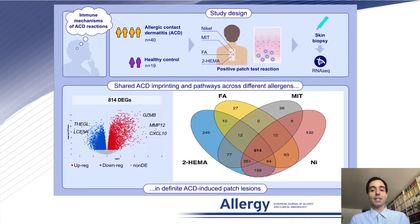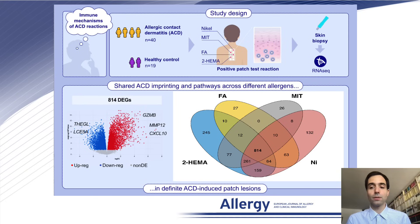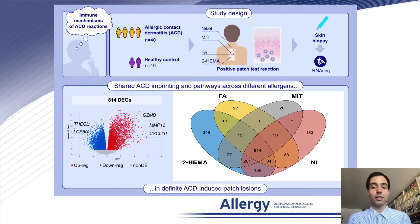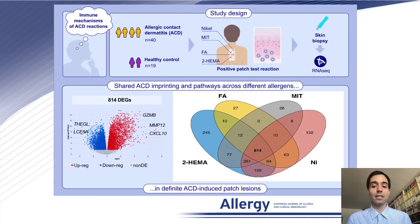In this abstract, you can see that the recruitment included 40 patients with ACD along with 19 controls. Skin samples were collected from positive patch test reactions to one of these four allergens: nickel, methylisothiazolinone, formaldehyde, and TOHIMA, as well as petrolatum occluded skin from healthy individuals. Then, RNA sequencing was performed.